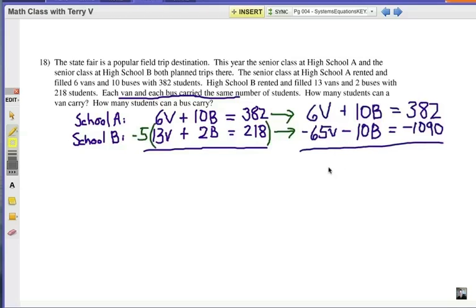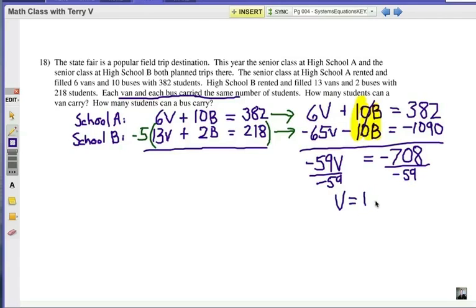Here are our two equations rewritten, and notice that the B terms are eliminated. Don't be concerned about the negative signs because usually they work themselves out. We do know that our answers have to be positive because we're talking about numbers of students. In our last step here, we're going to divide by the negative 59. And then we have a negative divided by a negative, so our answer is going to be a positive number. 12. It's going to be 12 students in each van.